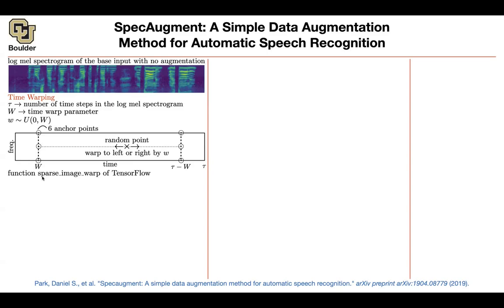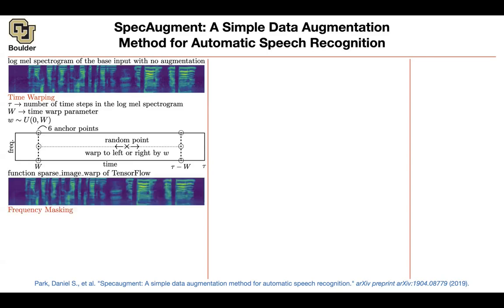In terms of implementation, at least in TensorFlow, there is the sparse image warp function that you can use. You apply it on your dataset.